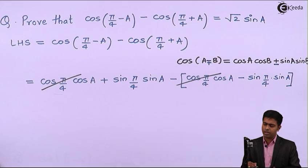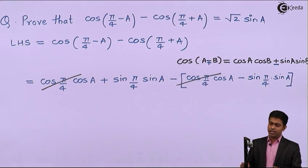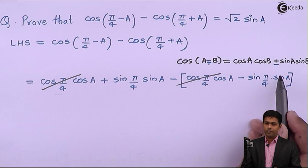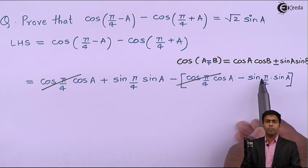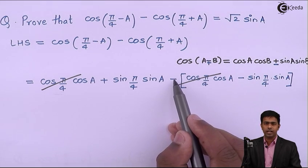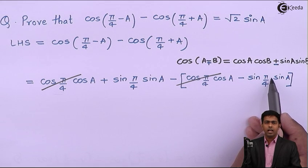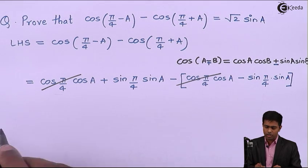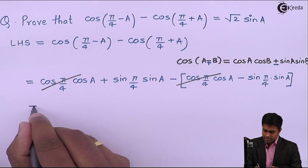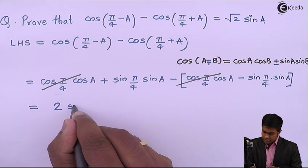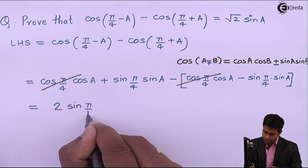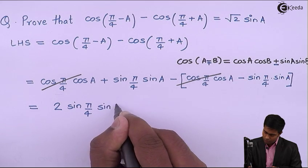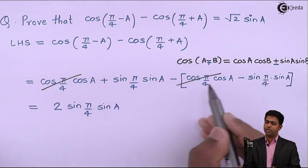Similarly, the second term which is negative will become positive because of this negative sign. So minus minus plus, and we will get the same term. Here I can say it is two times sin(π/4) sin A, so we are getting the same term two times.